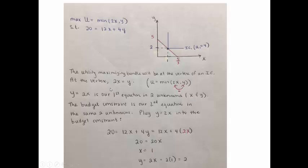Here's a graphical depiction of the consumer's budget line. When she only buys y, she can afford 20 divided by 4 units or 5 units. When she only buys x, she can afford 20 divided by 12 or 5 thirds units.